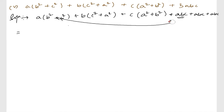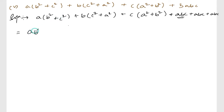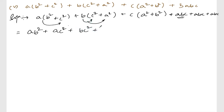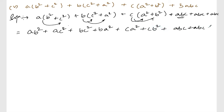So what we are going to do is multiply everything out first: a·b² = ab², a·c² = ac², b·c² = bc², b·a² = ba², c·a² = ca², c·b² = cb², plus abc + abc + abc.